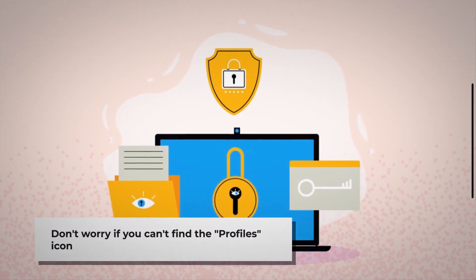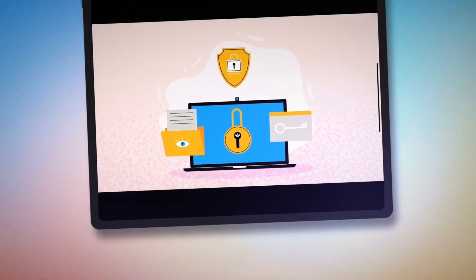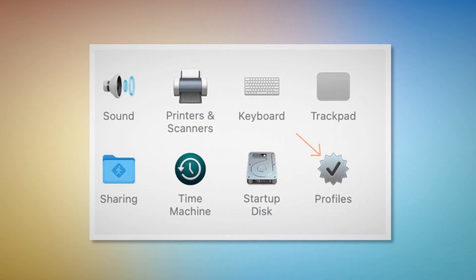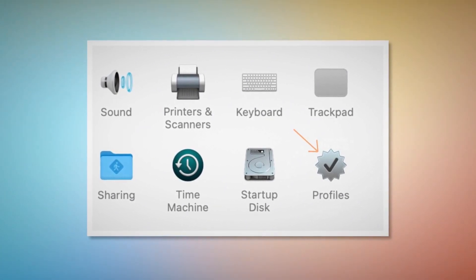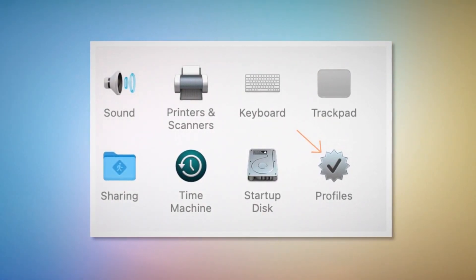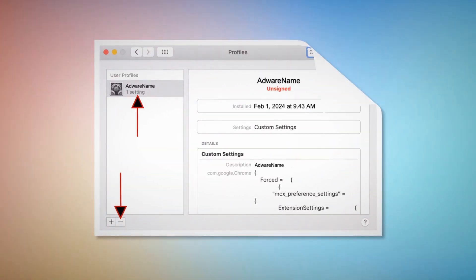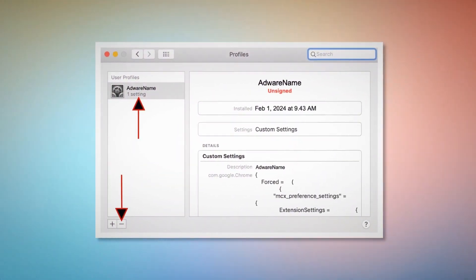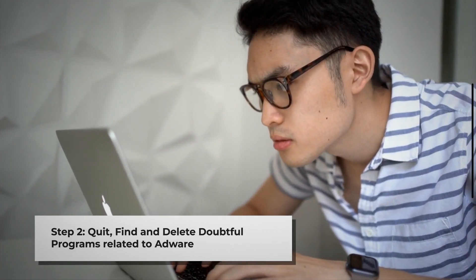If you can't find the Profiles icon, you can relax and skip Step 1 and go directly to Step 2. But if you can find the Profiles icon as shown in the screenshot, click on it. You will land on a window like the one shown — select the unknown or doubtful profile and then click the remove button to delete the profile.